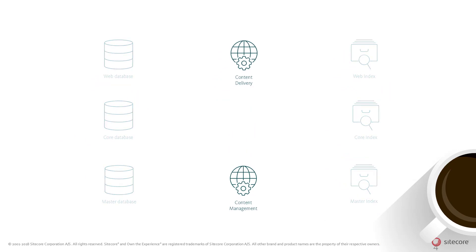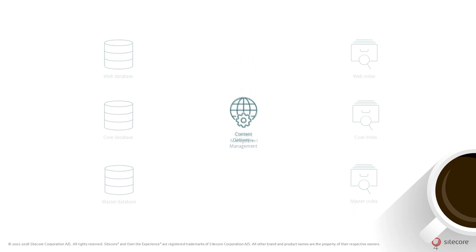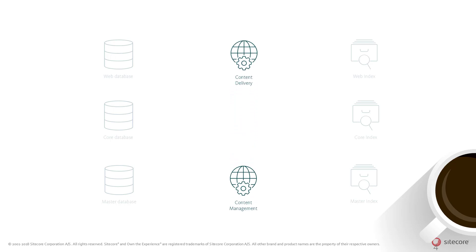The primary application roles in the Sitecore Experience Manager product are the content delivery and content management roles. These roles are not only essential for the Sitecore Experience Manager product but central for the entire Sitecore product portfolio. The content delivery and content management roles are called core roles, meaning they share code bases and run the core Sitecore application. For simplicity, these two logical roles can be combined into a single running application, or for scalability, they can be split into separate running applications across multiple servers.